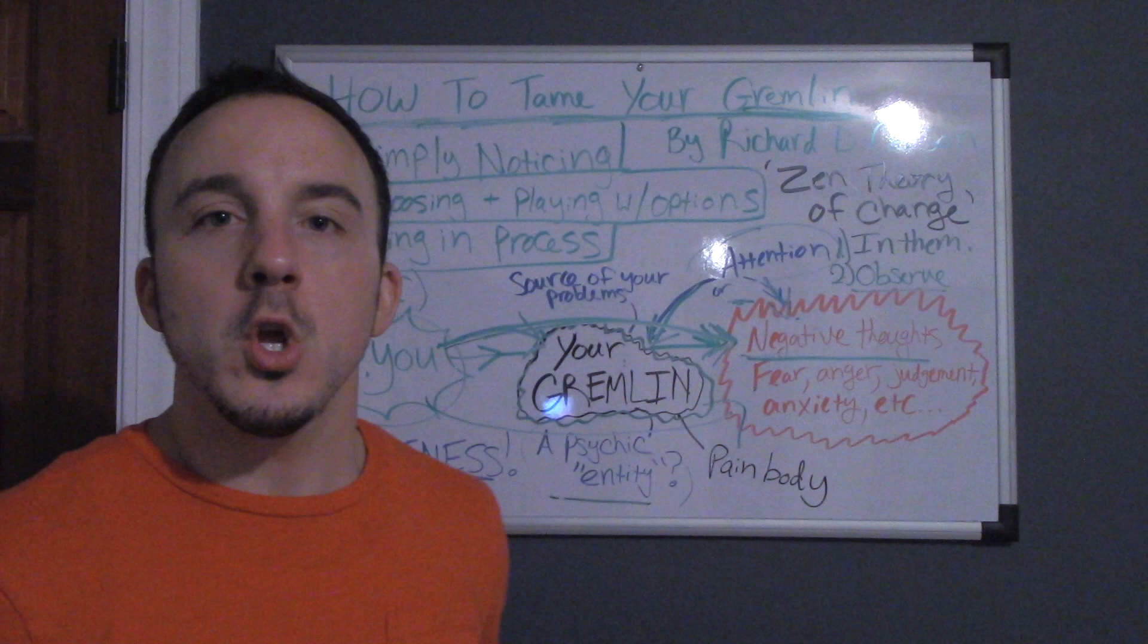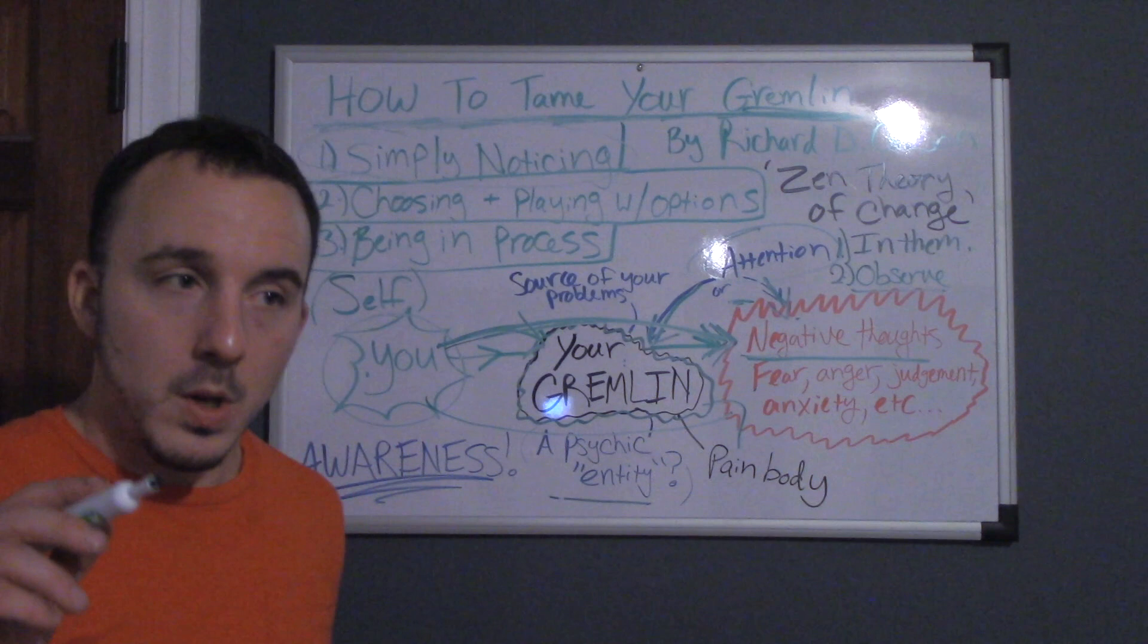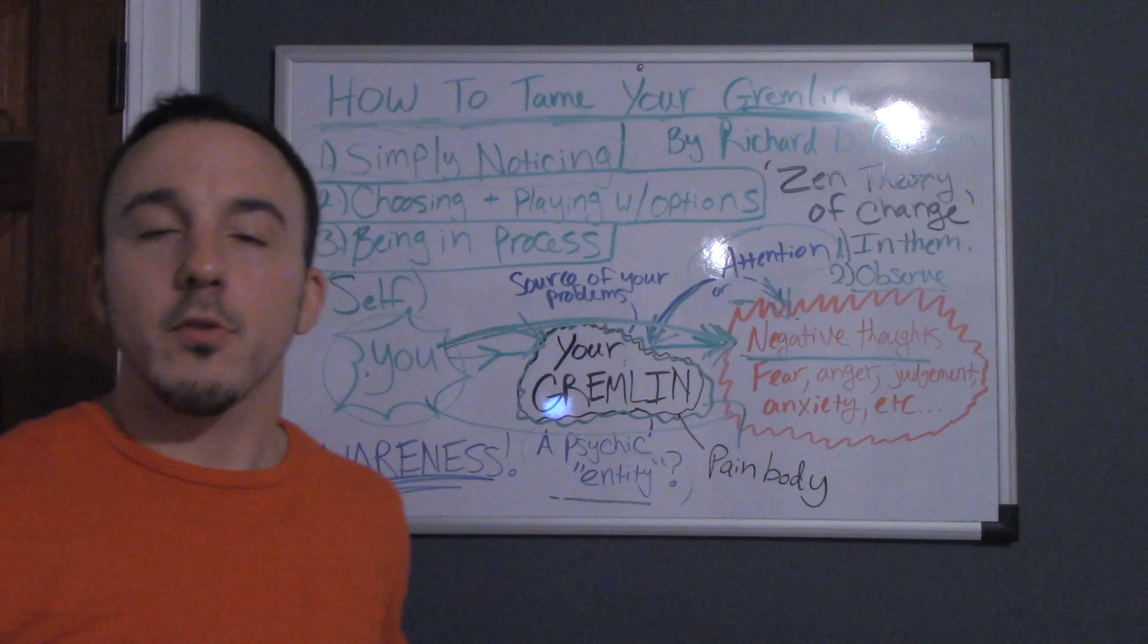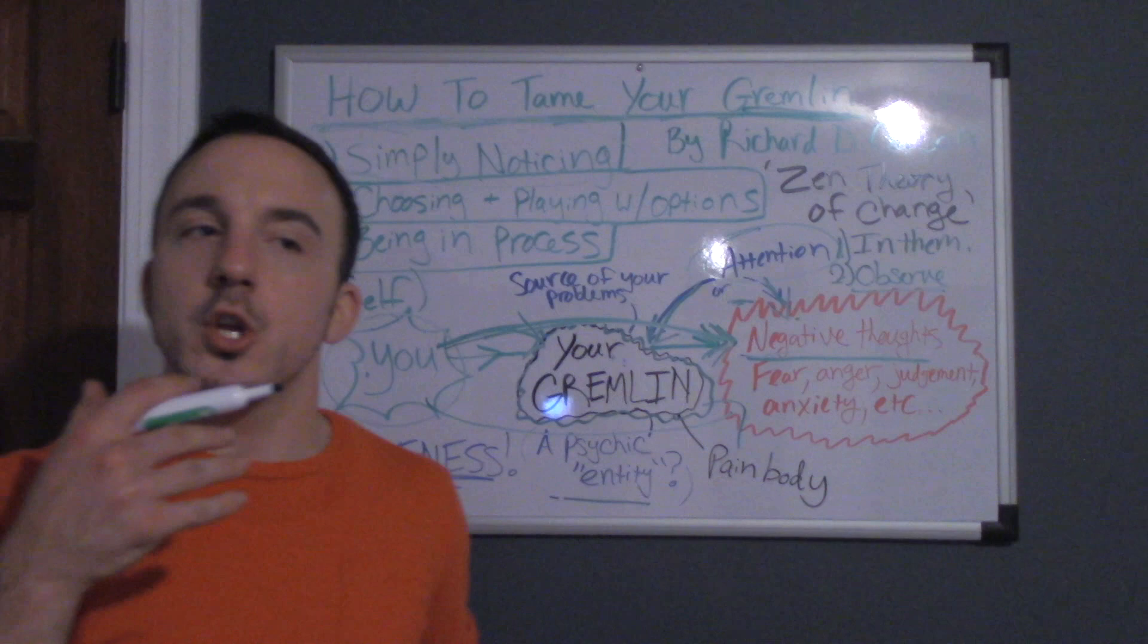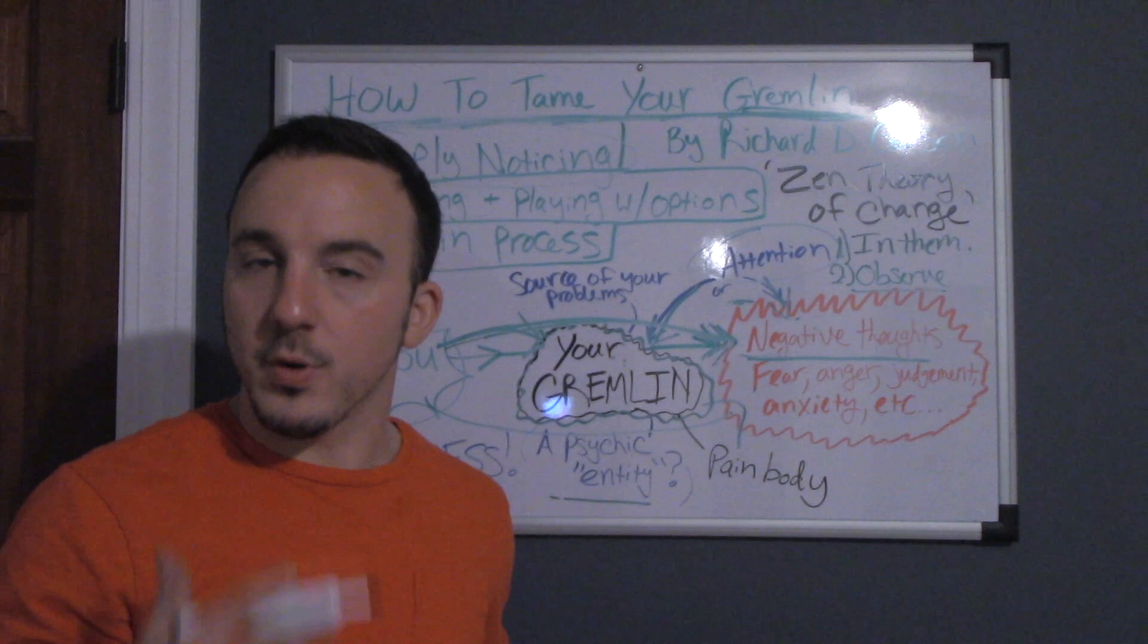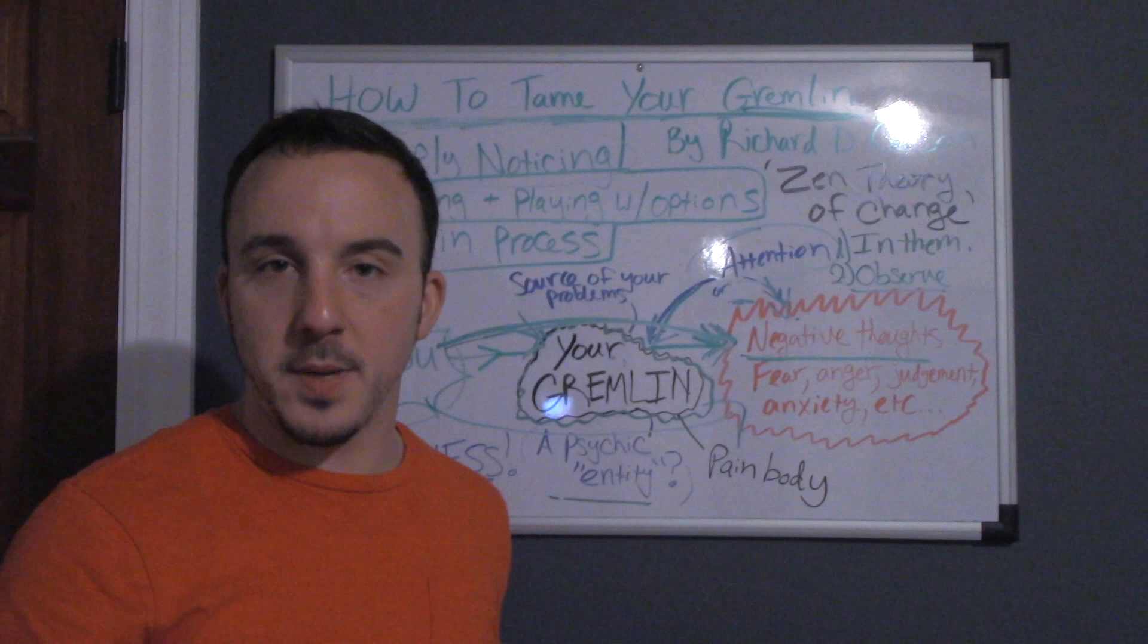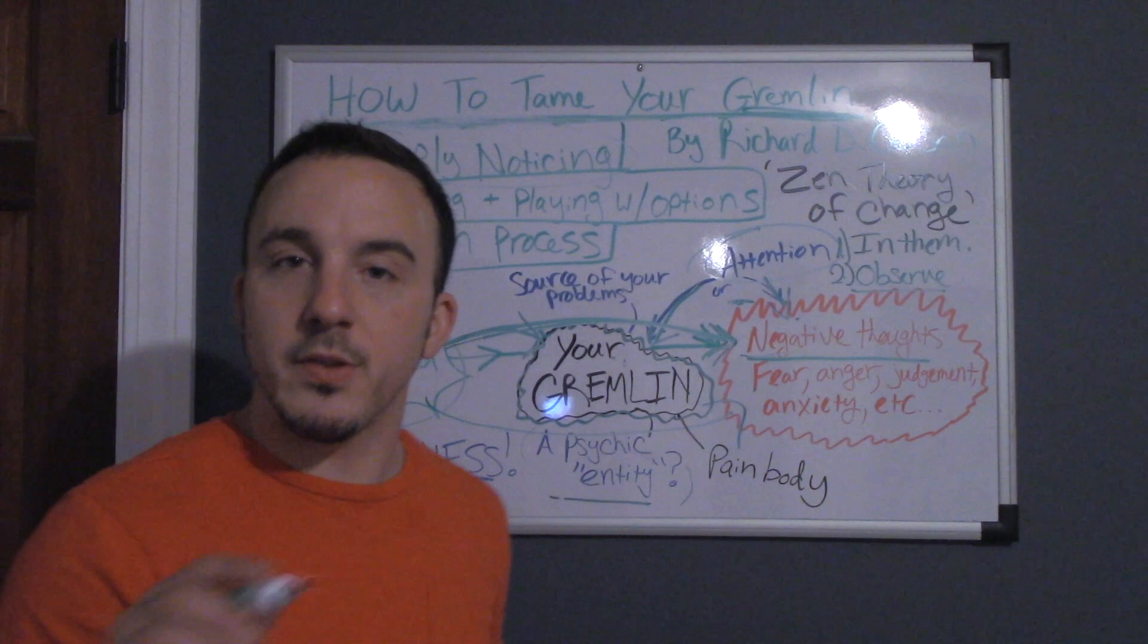The second step is choosing and playing with options. Now, the idea behind this is that you don't want to set any hard rules for yourself when you're engaging in this practice. You want to play around with it. So this means that when you have noticed your gremlin, it diffuses its power over you. And once you have done that, once you have gained freedom, to an extent, in the moment, you begin to make different decisions. You're no longer at the mercy of the gremlin. Gremlin is no longer controlling you and forcing you into avoidance behaviors and behaviors to protect yourself. You can begin to play with different options, but you don't want to set any hard rules for yourself. You want to just kind of play, just like it says, choose and play with options. Very, very loose. Very, very laid back. Just got to play around with different ideas.